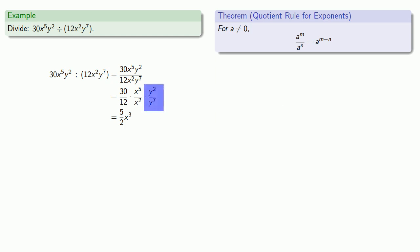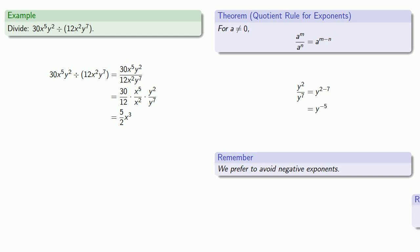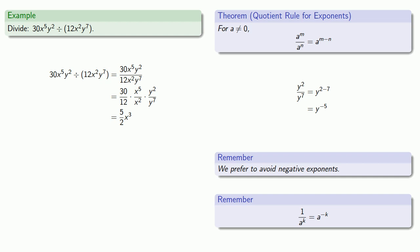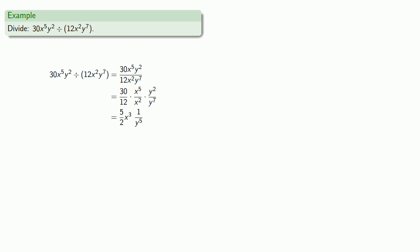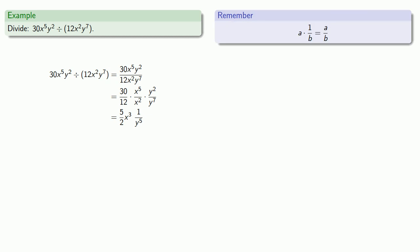The last fraction, y to the second over y to the seventh — we can use the quotient rule for exponents to simplify. While there's nothing really wrong with the resulting expression, we prefer to avoid negative exponents. Remember, 1 over a to the k is the same thing as a to the power of minus k, so we rewrite y to the minus 5 as 1 over y to the fifth. Finally, we multiply all of our terms together: 5 halves times x to the third times 1 over y to the fifth becomes 5x to the third over 2y to the fifth.